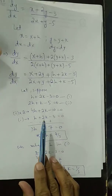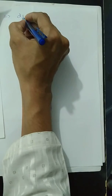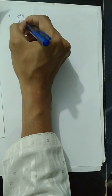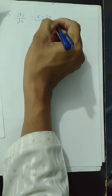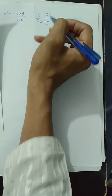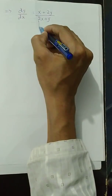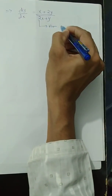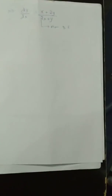With h = 7/3 and k = 1/3, the equation reduces to the homogeneous form: dY/dX = (X + 2Y) / (2X + Y). This is now a homogeneous differential equation, and we apply the method of solution for homogeneous differential equations.